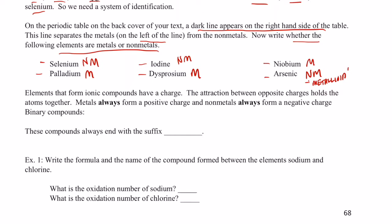Now, elements that form ionic compounds have a charge. Remember, ions have positive charges or negative charges. And it's the attraction between opposite charges that holds the atoms together. Metals always form a positive charge. Nonmetals always form a negative charge. So we have a metal bonded to a nonmetal. One's positive, one's negative. They'll be attracted to each other to form an ionic bond.